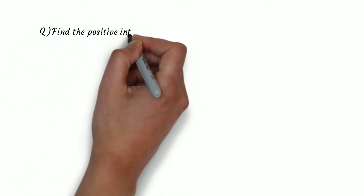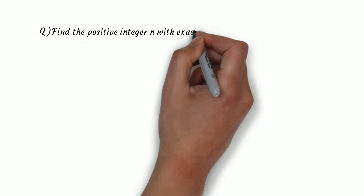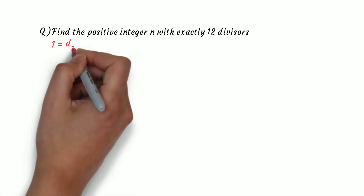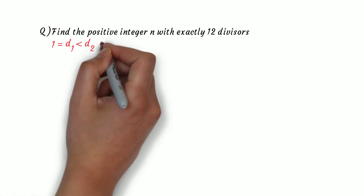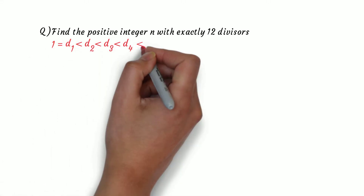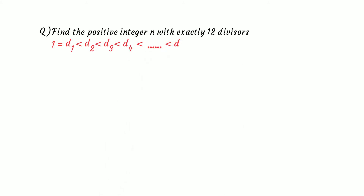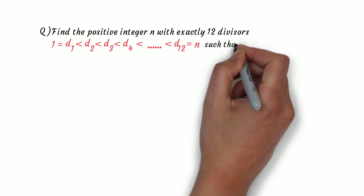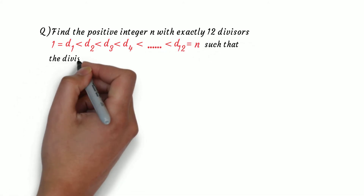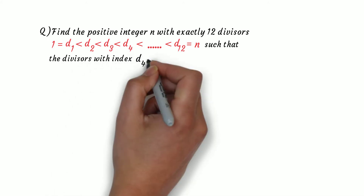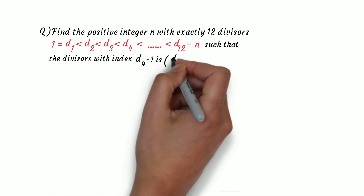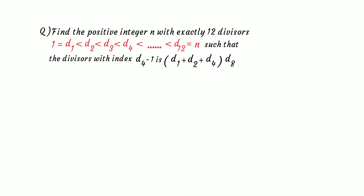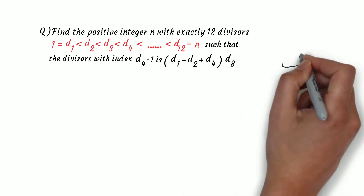Find the positive integer n with exactly 12 divisors: 1 = d1 < d2 < d3 < d4 < ... < d12 = n, such that the divisor with index (d4 - 1) equals (d1 + d2 + d4) × d8. Now let's solve this interesting question.